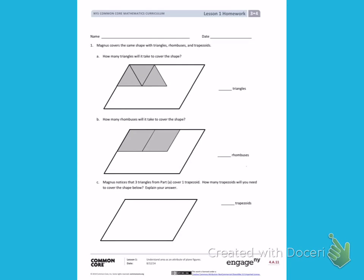This is Module 4, Lesson 1, Side 1. Today's objective was to understand area as an attribute of a plane figure.